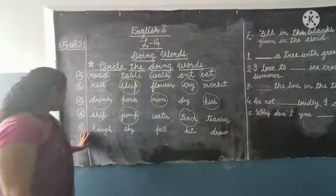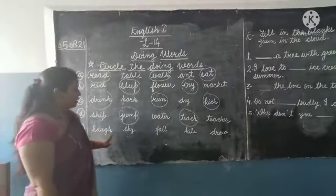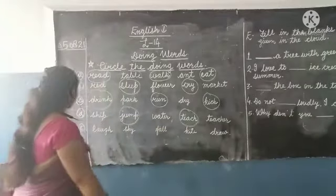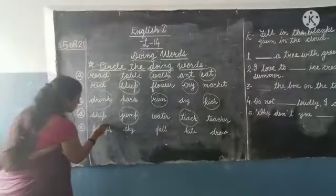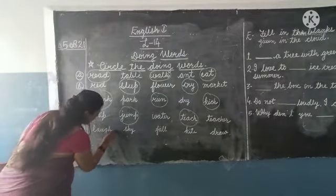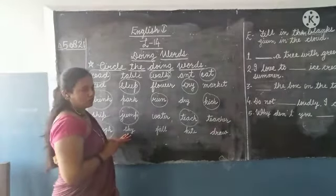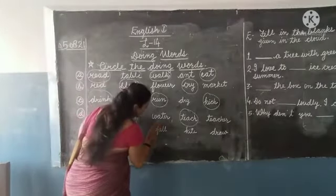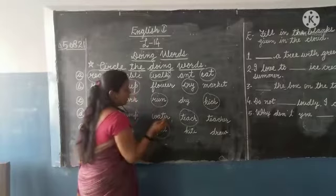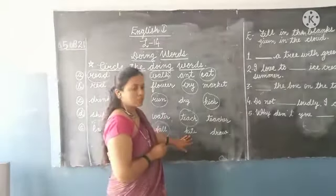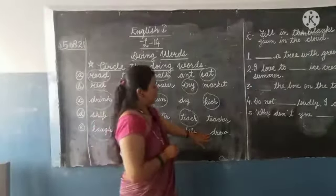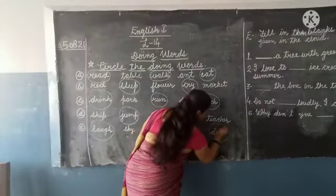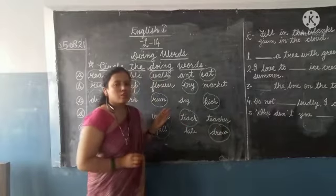The last set of words: laugh, sky, fall, kite, and draw. 'Laugh' is also a doing word - laughing is an action word, so we circle it. 'Sky' is not a doing word. 'Fall' is also an action word, so we circle it. 'Kite' is a thing name, so we are not going to circle it. 'Draw' is also an action word, so we circle it.